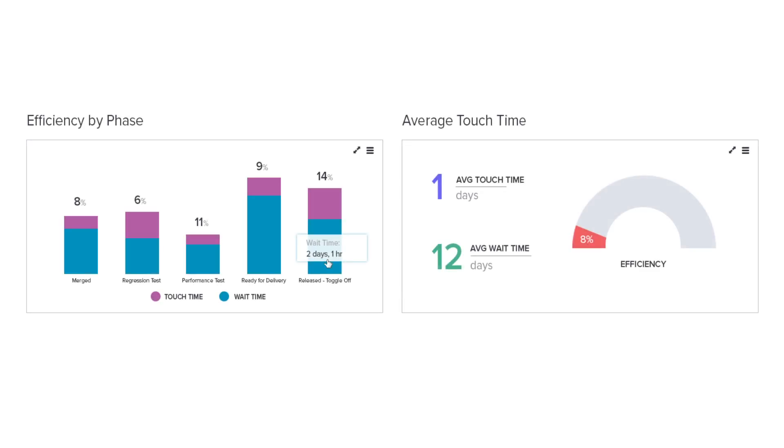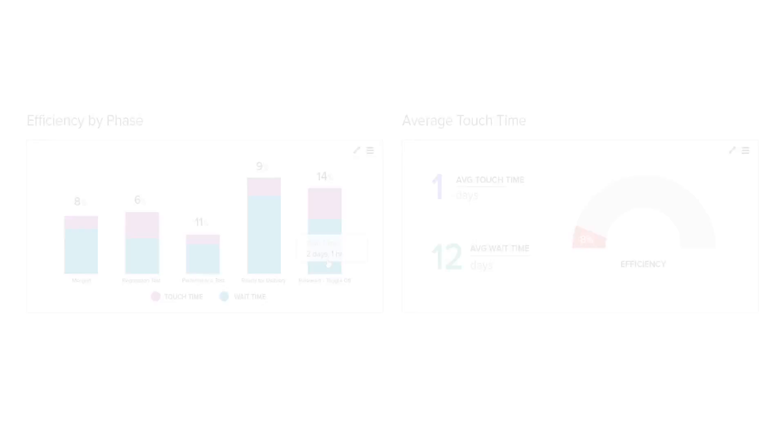Some other concepts we borrow from lean are touch time versus wait time. Touch time is the amount of time we actually spend adding value to a user story or defect, and wait time is the amount of time it's been stationary waiting for some next step or activity. If you can calculate the touch time and the wait time at a work item level, that starts to provide really powerful information. For example, through the quality assurance phase, if I can express my touch time and my wait time, I can start to look at how efficient that phase is.